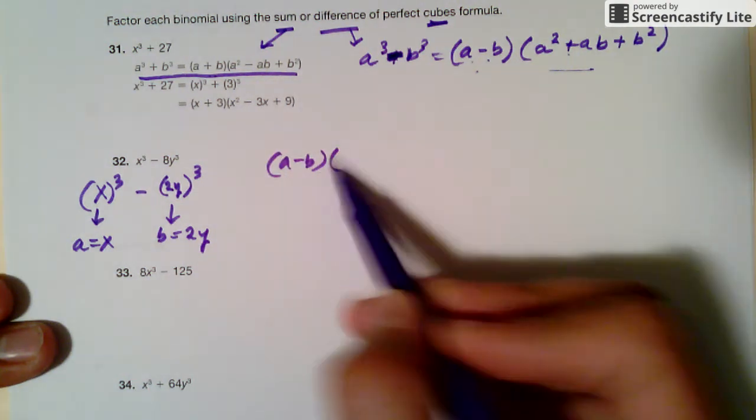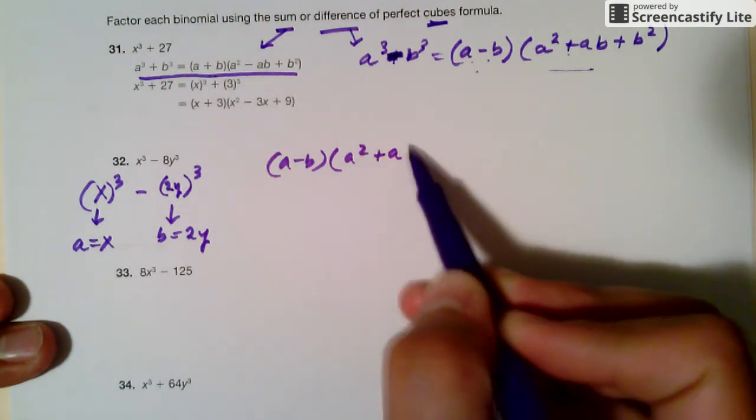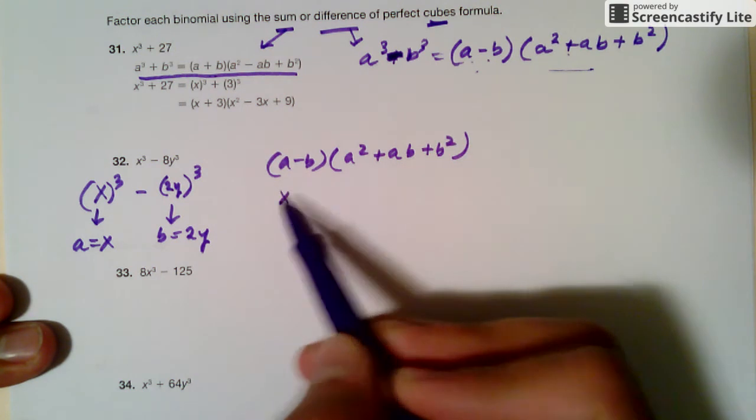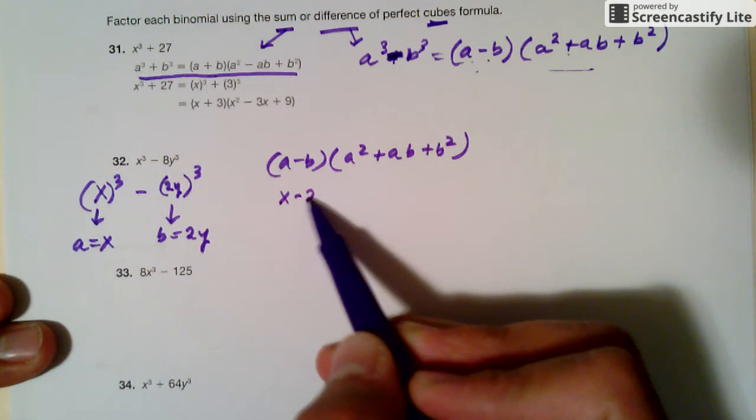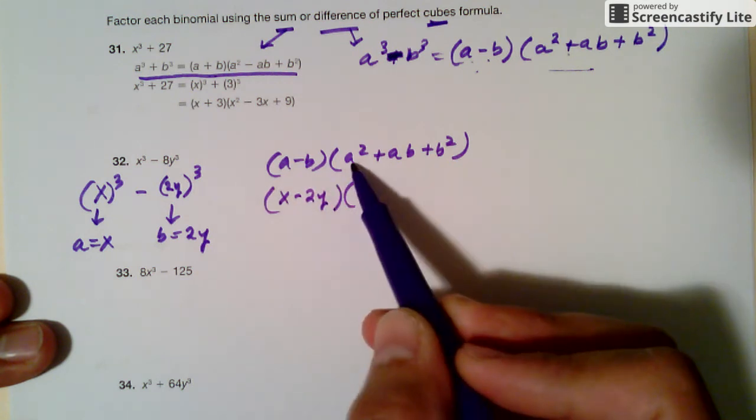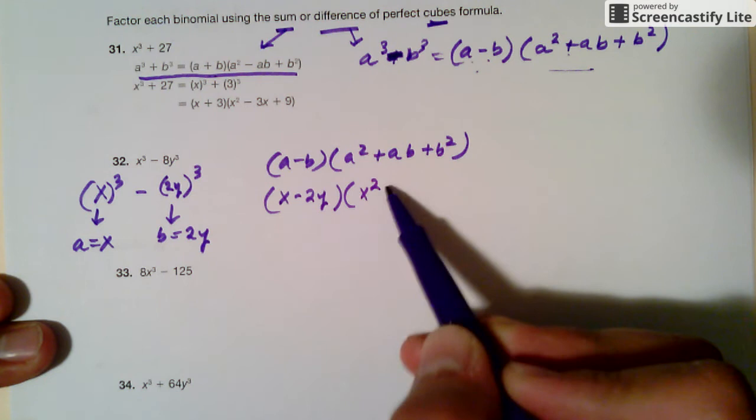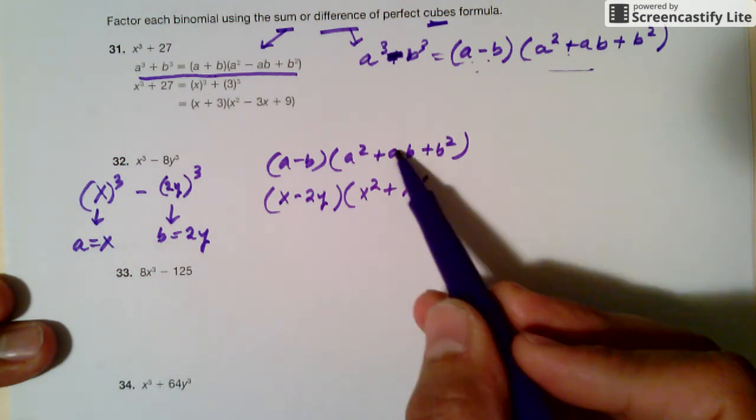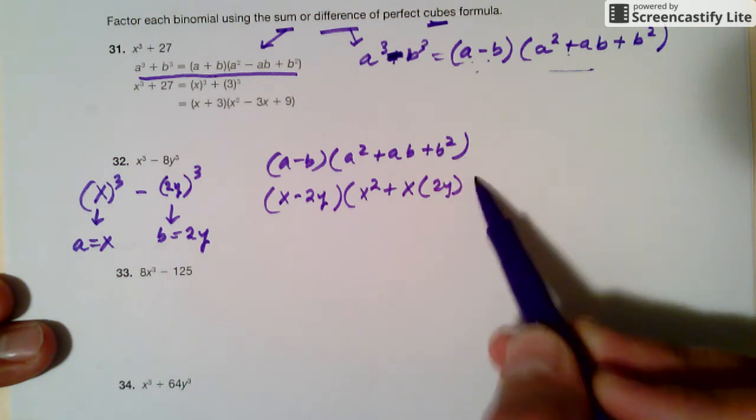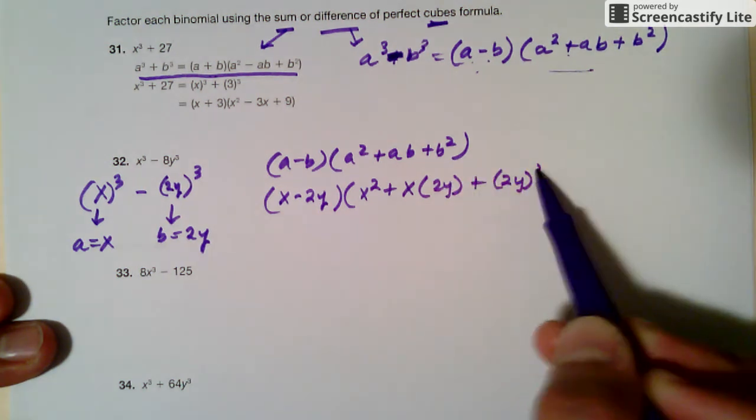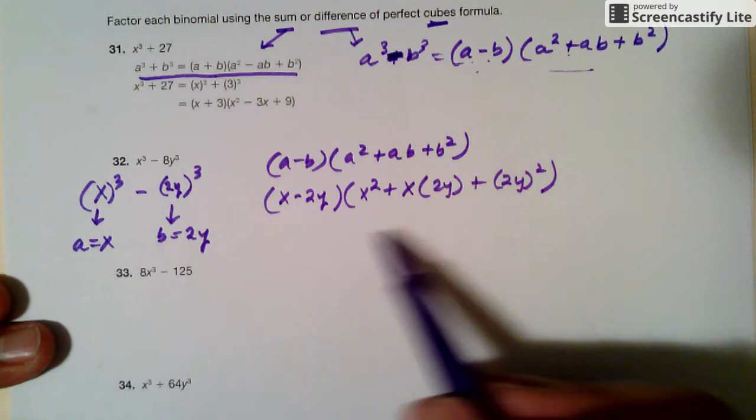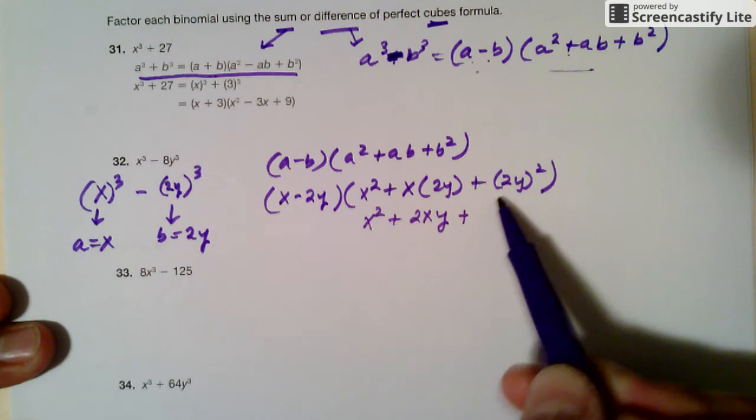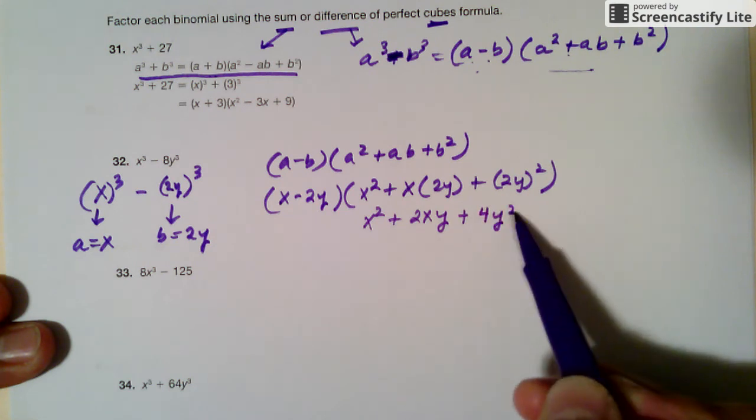And so usually, I just rewrite the formula and then replace all the pieces with my a and the b. The a now is x, the b now is 2y, and so that's a square, x square, plus a, which is x, times b, which is 2y, and then plus b square. And then clean this up. This is x square plus 2xy plus 4y square.